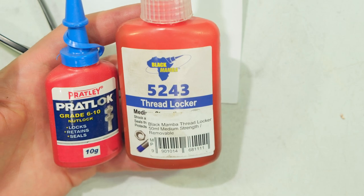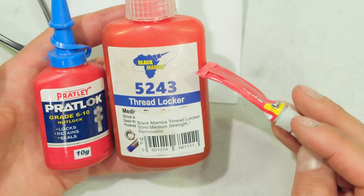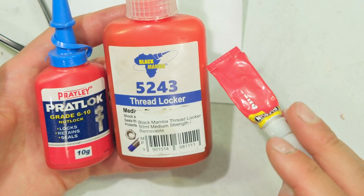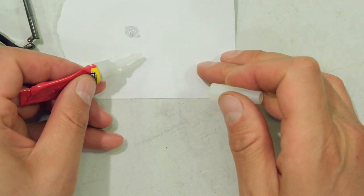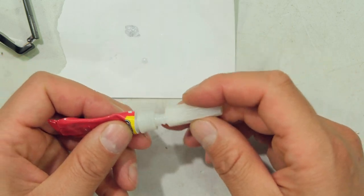Now the correct products are thread lockers. Over here, I've got one brand here, another one. But if you do not have that, you can also use super glue and I'll demonstrate using super glue. So what I do is I just take a drop of super glue and put on a piece of paper. That's all, just a drop.